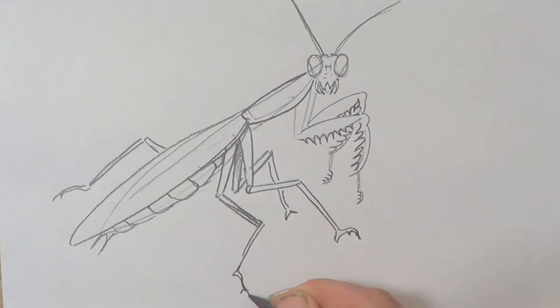And that's it. So now you can see he's got two back legs, two front legs, two front arms.